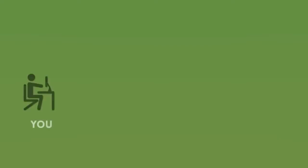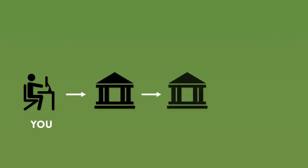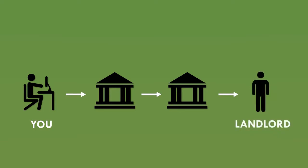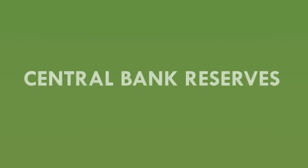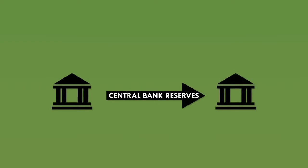Now imagine that you need to pay your rent and your landlord has an account with a different bank to you. When you log into your internet banking and make the payment to your landlord, your bank has to send some money to your landlord's bank to settle and complete the transaction. The banks don't want to make these payments in physical cash because carrying all this money around is dangerous, even with security vans and guards. So instead, they use a type of electronic money called central bank reserves. Central bank reserves are effectively an electronic version of cash, and banks use these to make payments to each other.